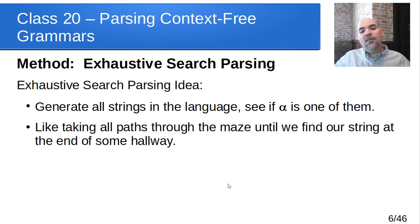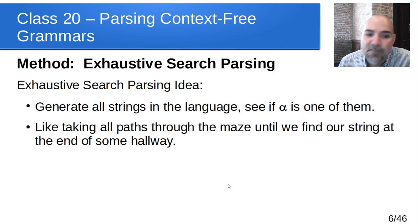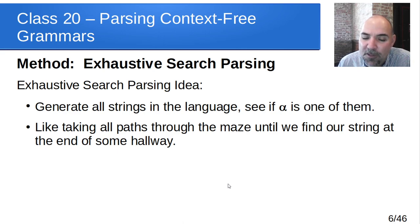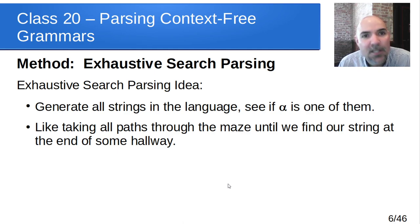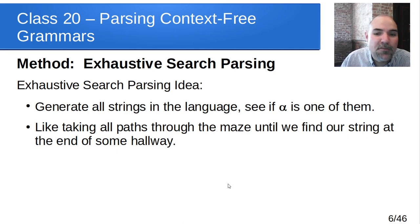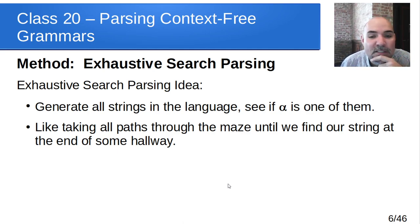The first method we're going to look at is called exhaustive search parsing. The idea is that we generate all strings in the language and see if the string we're trying to parse is one of them. It's like taking all paths through the maze: at every branch, we take all paths. Those come to branches, and we take all of those. It's called exhaustive because it blows up very quickly into a large number of pathways that need to be investigated.